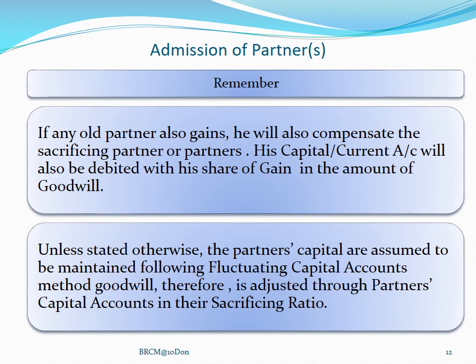The second important point: you have seen in the journal entries that capital account and current account are both written together in many places. This means we can transfer to either capital or current account. But if the question is silent, we transfer to the capital account. If the question states that the partners' capital accounts are fixed, then we transfer to the current account. Goodwill is therefore adjusted through partners' capital account in their sacrificing ratio, but if it is fixed, then it will be transferred to the current account of the sacrificing partners in their sacrificing ratio.